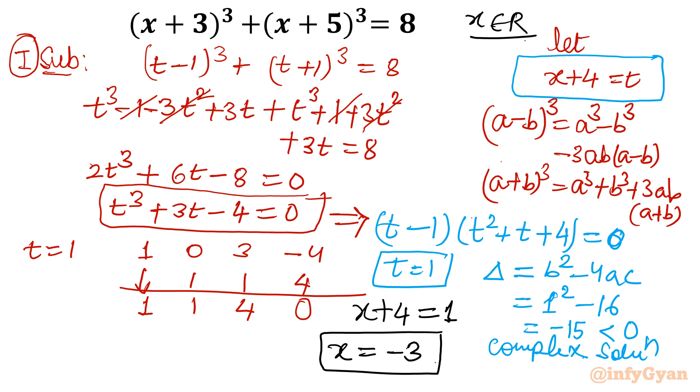Now second method I will show, that is conventional method. Conventional method is simply expand a plus b cube, find out cubic equation, then go for again remainder theorem.